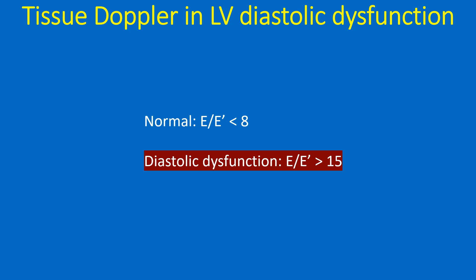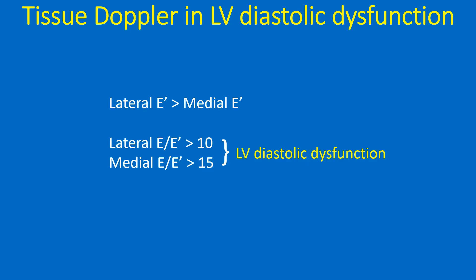Estimation of pulmonary capillary wedge pressure from E by E prime on tissue Doppler was covered in another video on this channel. The E prime velocity at the lateral mitral annulus differs from that at the septal mitral annulus; septal E prime is slightly lower than lateral E prime. E by E prime at the lateral mitral annulus more than 10, and E by E prime at the septal mitral annulus more than 15, indicates left ventricular diastolic dysfunction.